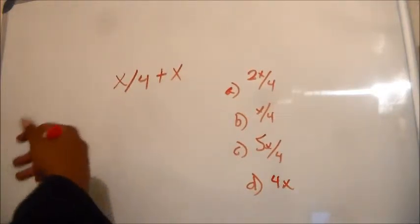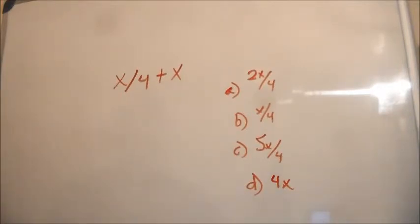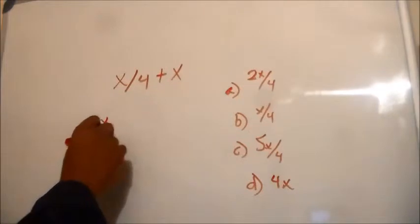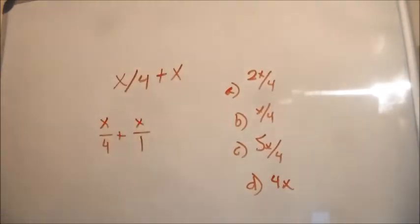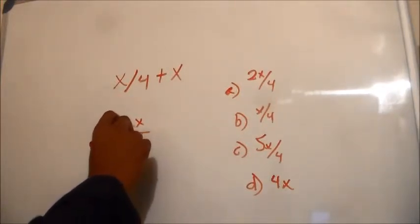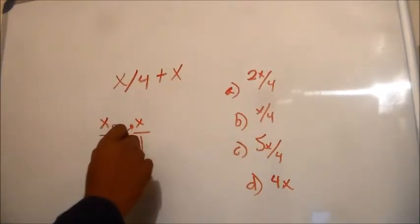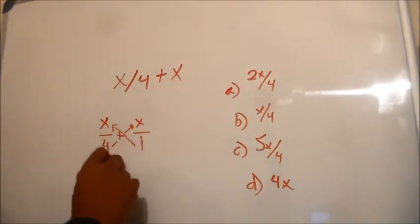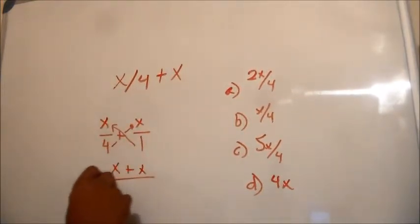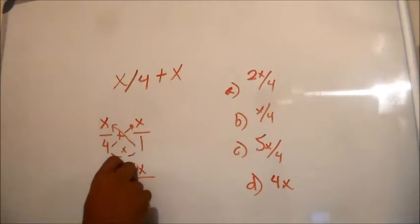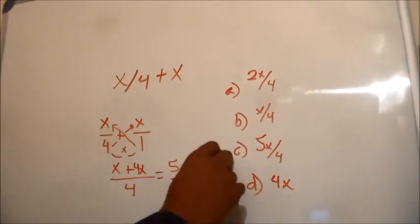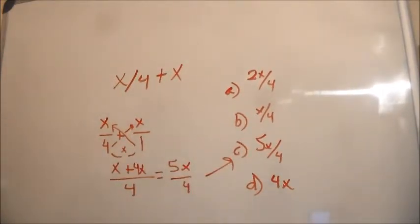For fractions — I do have a fraction video — the way I work this out is X over 4 plus X over 1. Something without a denominator we always assume over 1. My method for dealing with fractions is cross multiplication of the denominators and numerators: 1 times X is X, plus 4 times X is 4X, over 4 times 1 which is 4. Combining like terms gives us 5X over 4, so our answer is C.